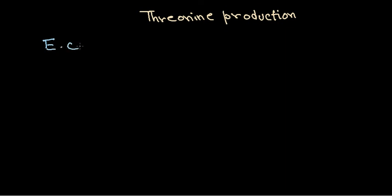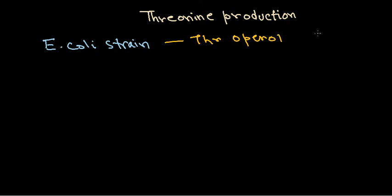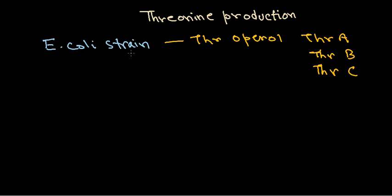We find a different E. coli threonine operon that involves three different genes — threonine A, threonine B, and threonine C — placed side by side to produce threonine. We instigate and develop this type of bacterial strain so that they produce our desired product.